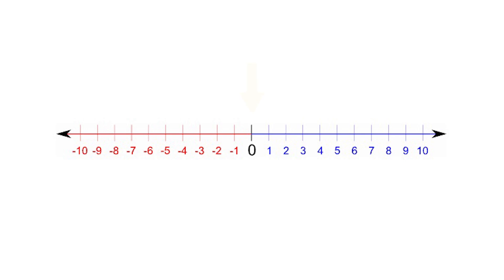To make things simple, just remember this: zero is the middle line. All numbers to the right are positive and all numbers to the left are negative. A number 5 lines away to the left from 0 is negative 5. And 10 lines away to the right of 0 is positive 10.